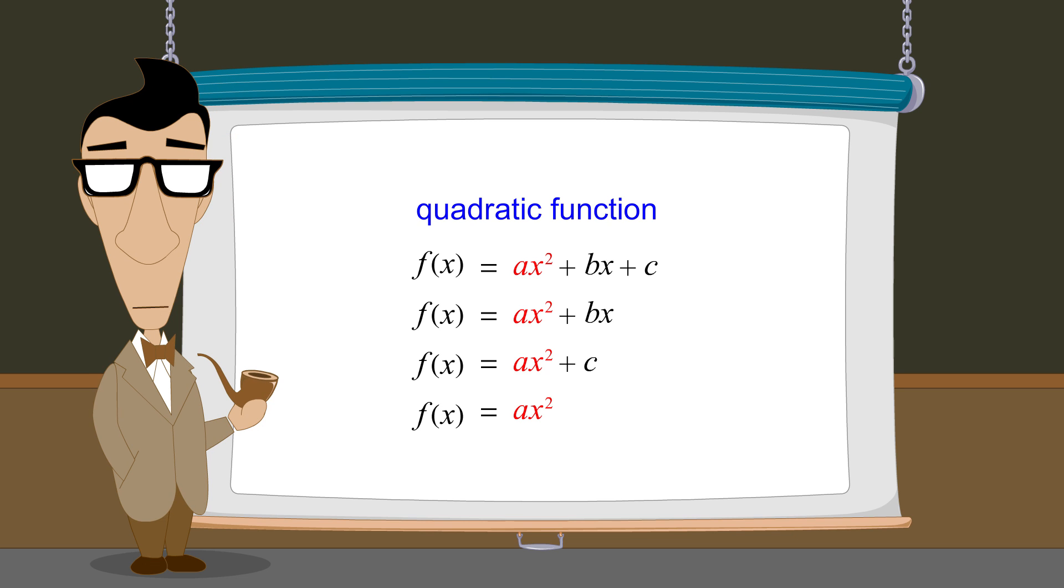So what does a quadratic function look like when graphed? The graph of any quadratic function with a single variable always has the same basic shape, called a parabola.